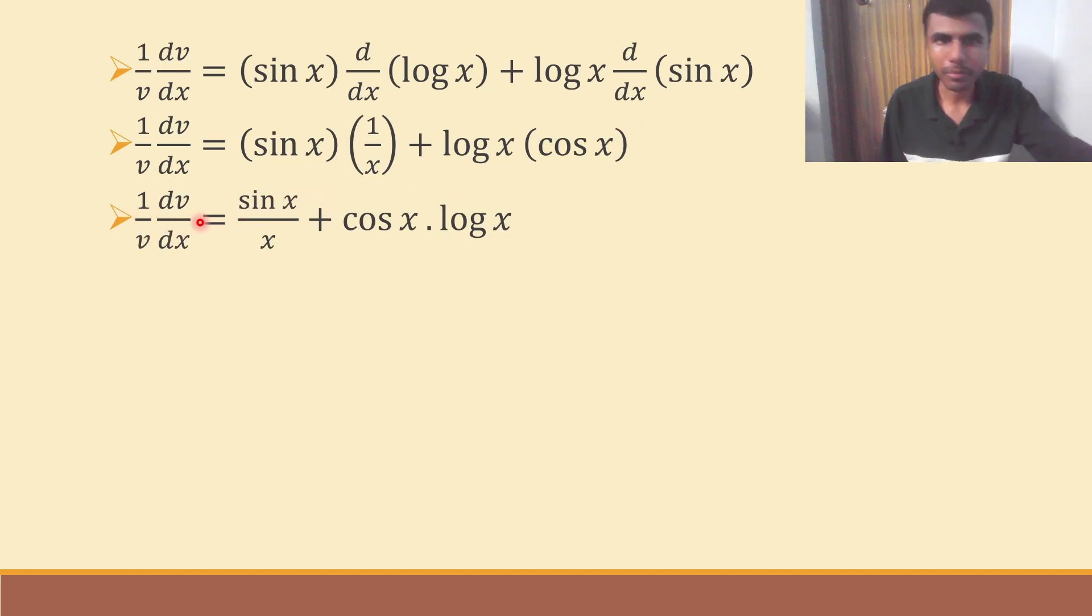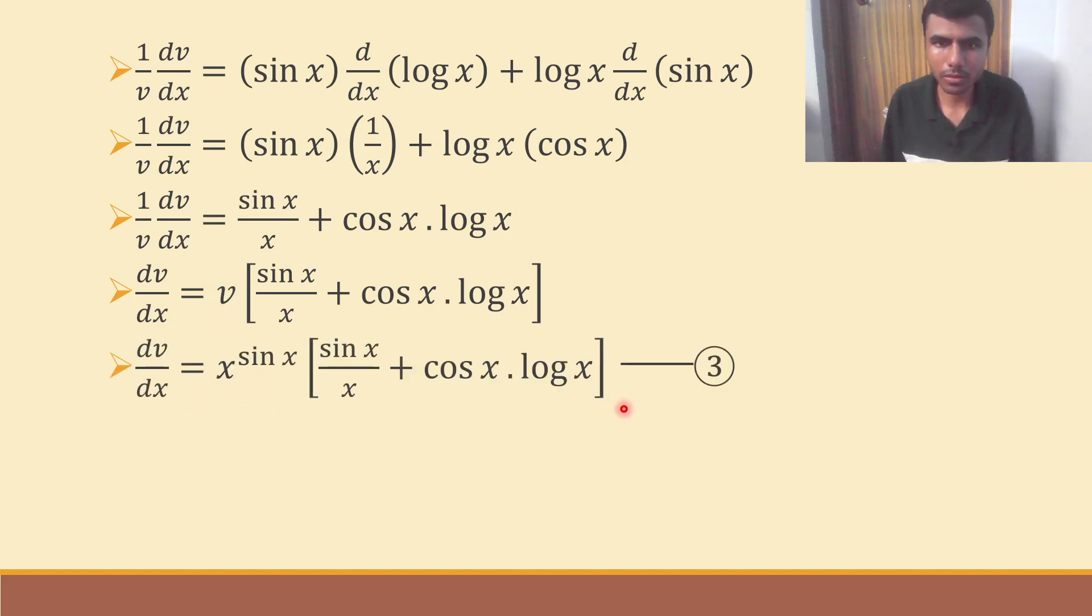Again, some basic simplification. 1 by v dv by dx is nothing but sine x by x plus cos x log x. This dot represents product. In the textbook also, they have used it. So, it's fine if you write it like this. Now, send the v here. Same thing. V is nothing but x power sine x. So, I would get equation 3.